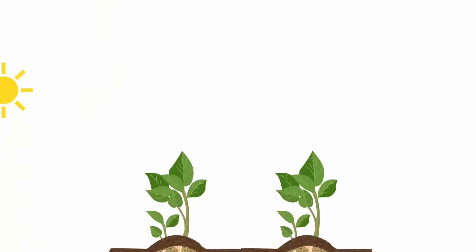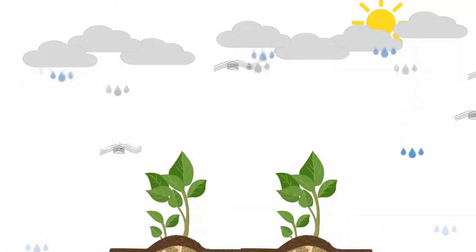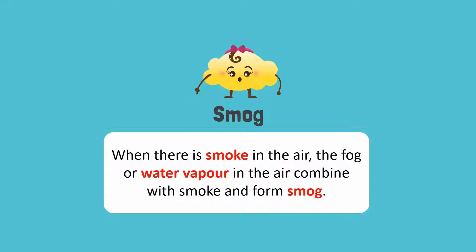Also, the rate of evaporation from plants and animals is controlled by the amount of water vapor present in the air. But sometimes, this water vapor forms smog. When there is smoke in the air, the fog or water vapor in the air combine with smoke and forms smog.